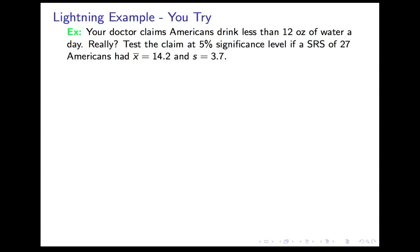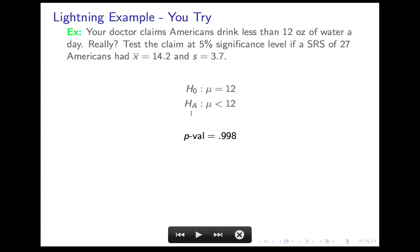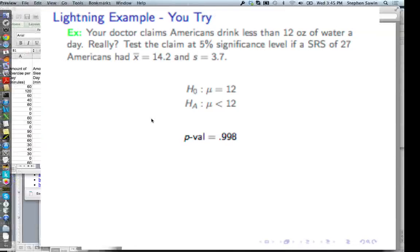All right. You try this lightning example. Here, you'll have to enter the data in the summary statistics and check the box. So I'm going to pause the tape, read this through, and test the claim, and then let's check it out. Your doctor claims Americans drink less than 12 ounces of water a day. Really? Let's test the claim at the 5% significance level. Let's suppose a simple random sample of 27 Americans had an x̄ of 14.2 and a standard deviation of 3.7. Our null hypothesis, default assumption, the thing with the equal sign, is that they do drink, on average, 12 ounces of water a day. And the alternate hypothesis, what he's suggesting, the claim that we're testing, is that it's less than 12 ounces. Our p-value is 0.998. Let's go check that out.